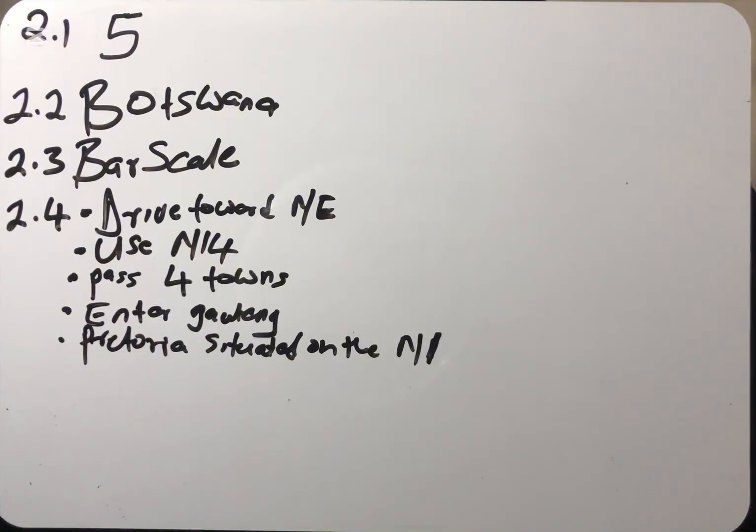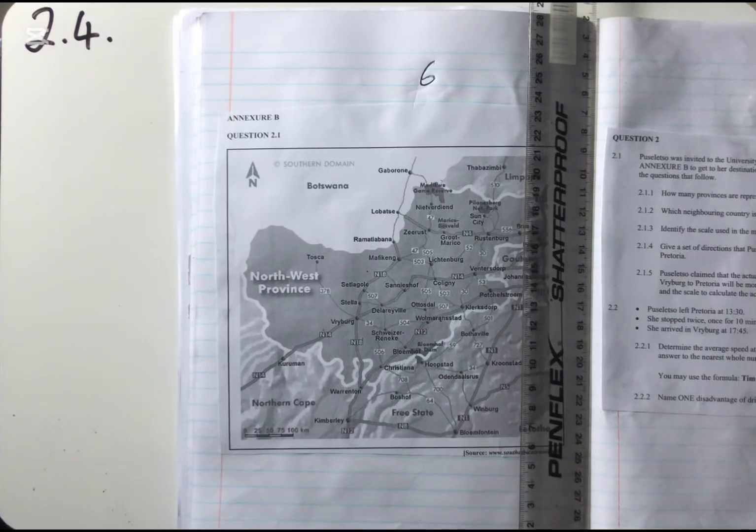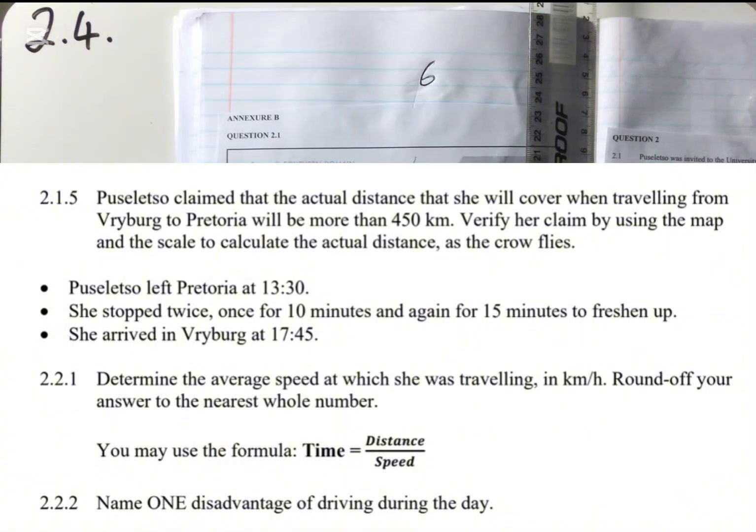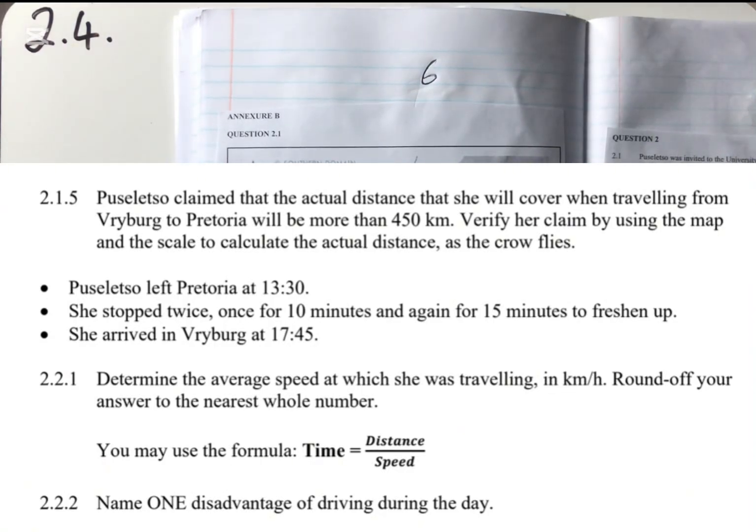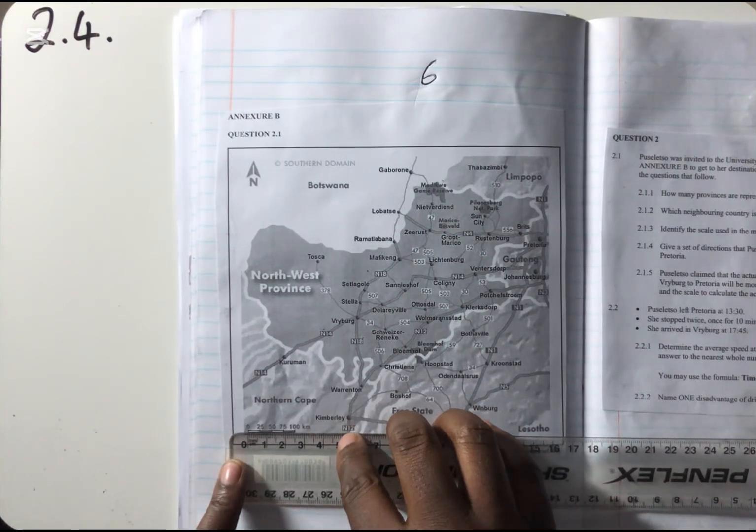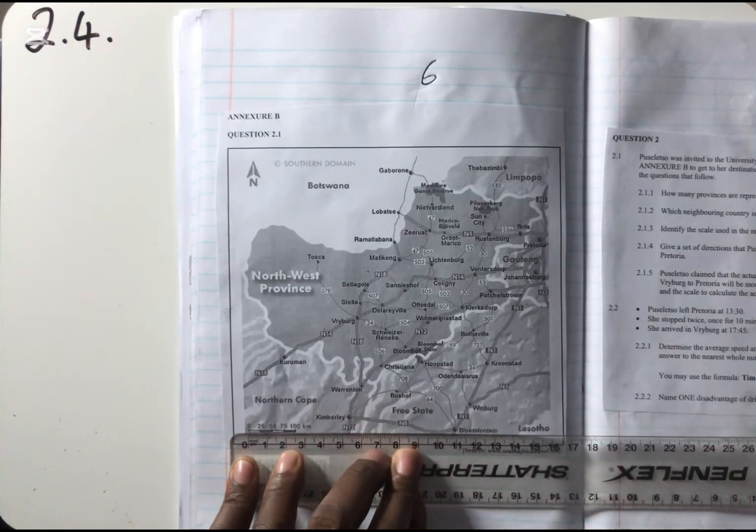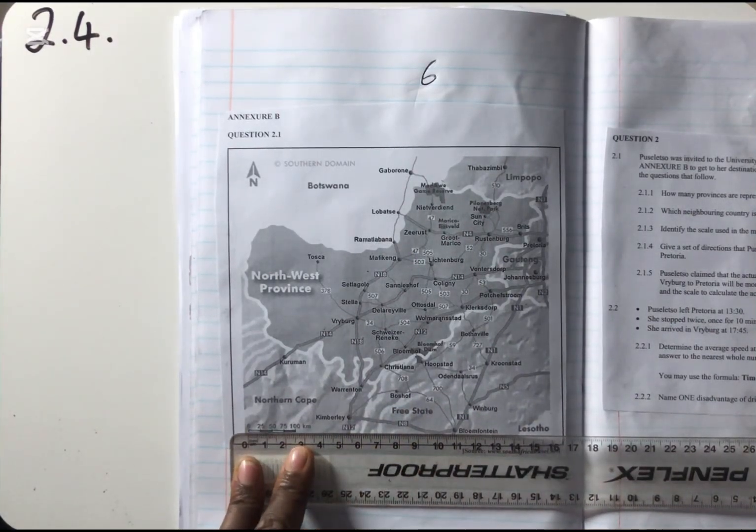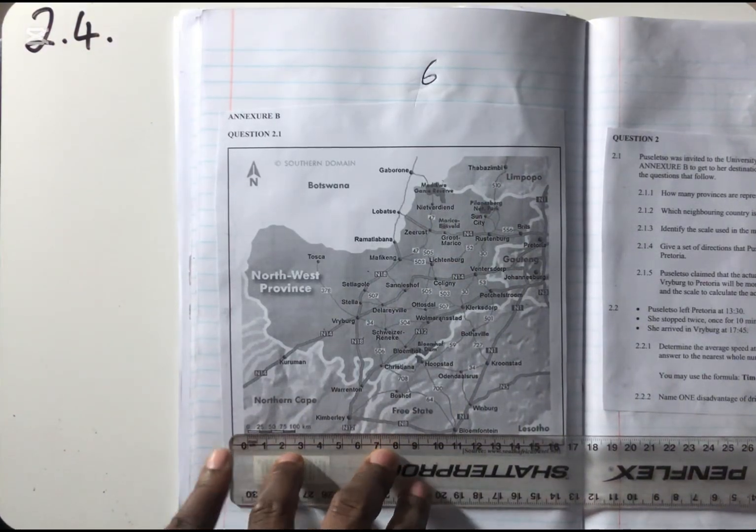Now we move to the next question. Puseleto claimed that the actual distance that she will cover when traveling from Freiburg to Pretoria will be more than 450 kilometers. Verify her claim by using the map and the scale to calculate the actual distance as the crow flies. We must identify these two locations. You must also not forget that we must measure this bar scale. We can see that when I measured the original question paper using my ruler here, I found that the length of the bar scale is 2.5 centimeters.